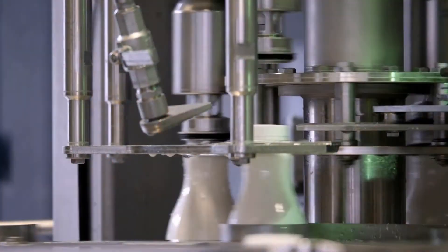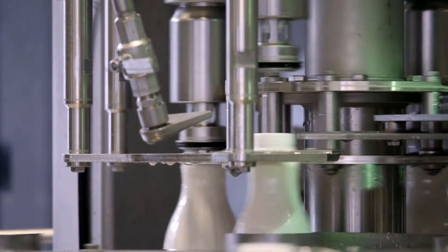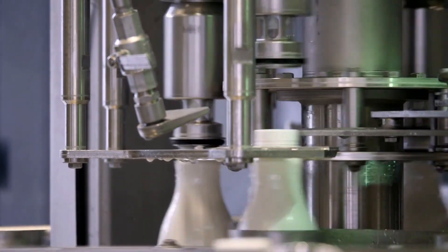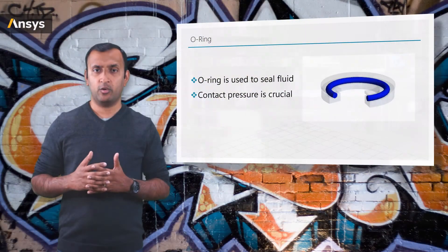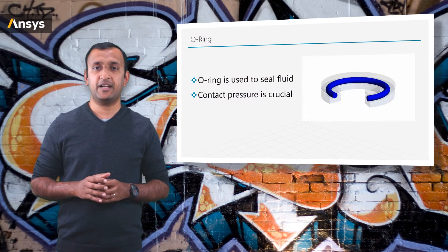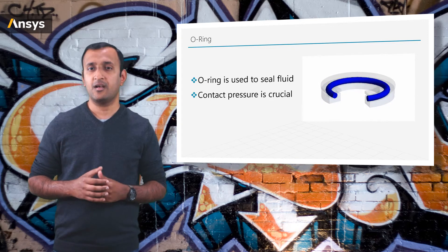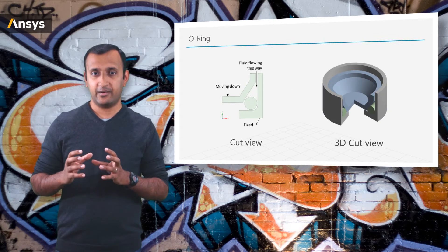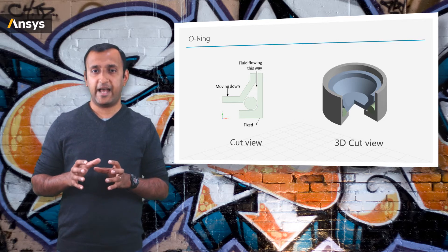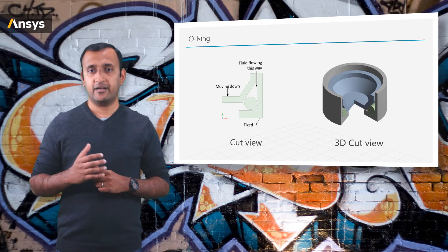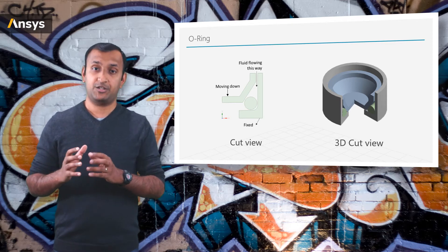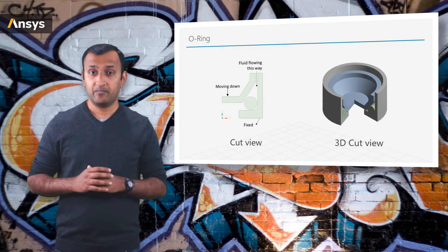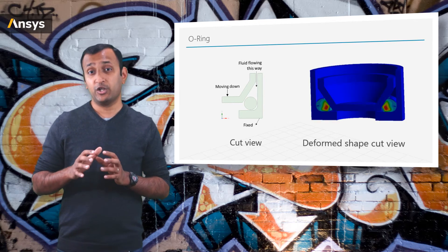Now let's look at our final example, which is an O-ring assembly. O-rings are commonly used to seal the gaps between mating parts in several assemblies such as water filters, espresso machines, and many more. The performance of an O-ring is assessed based on the contact pressure created at the interface during operation. In this example, we will explore the design of an O-ring system designed to seal a pressurized fluid. Under the action of the fluid, the O-ring is expected to deform but support the applied pressure, fill up, and seal the gaps.